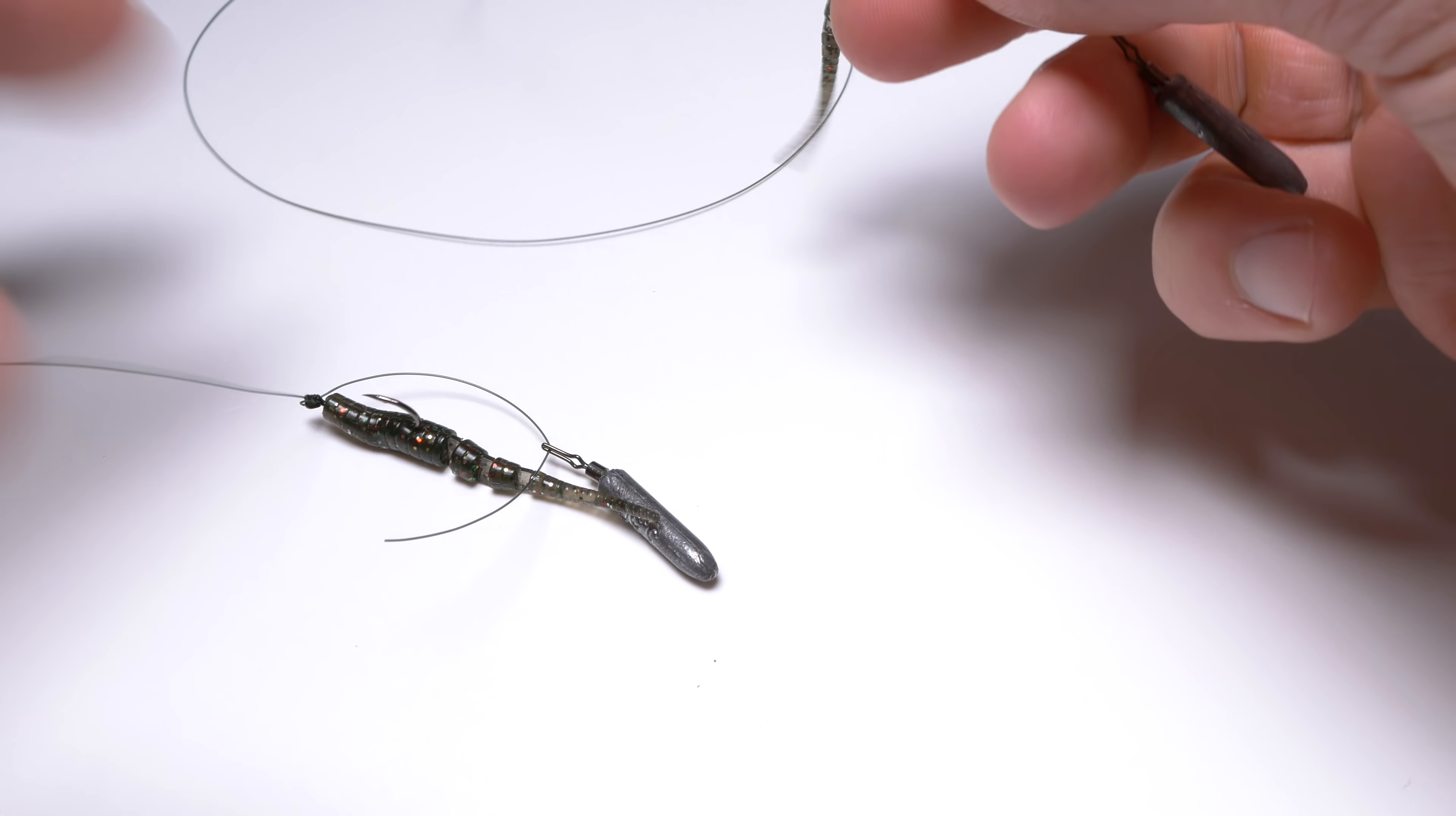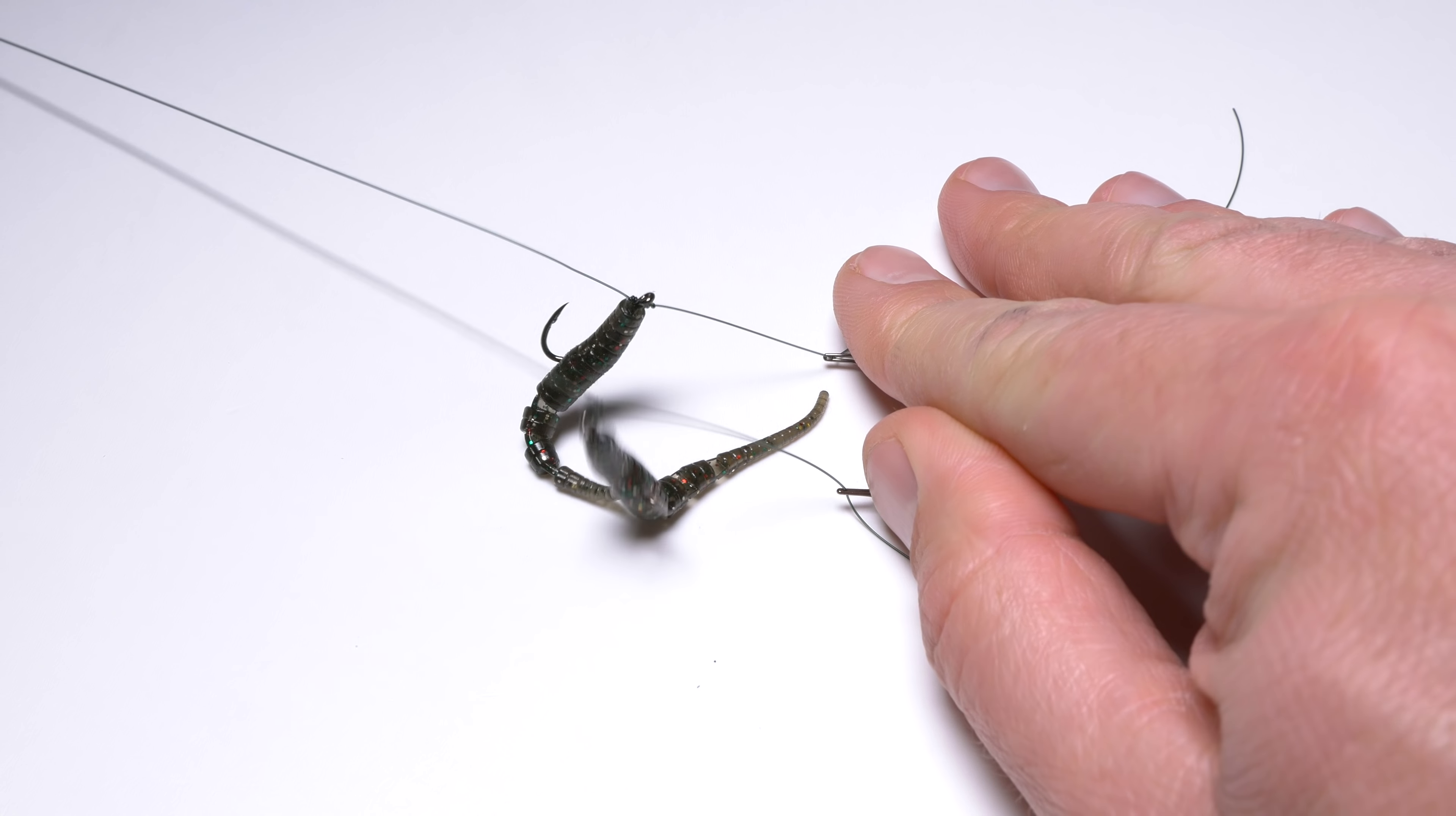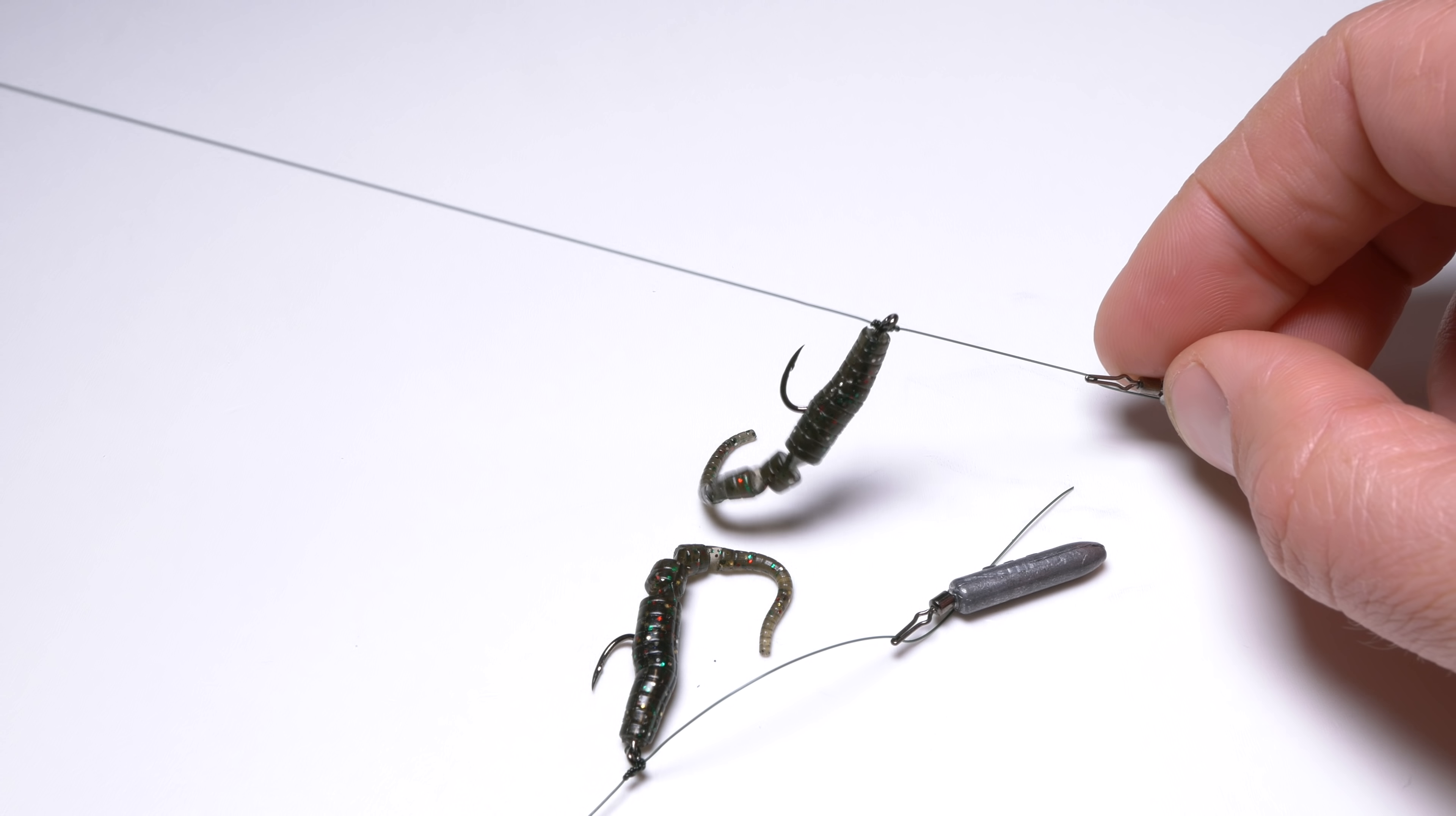And now, let's compare this rig to classic drop shot rig which has the hook always at 90 degrees. As you can see, the drop shot, the classic drop shot rig, is always pointing down and when the angle with the line will not be right.